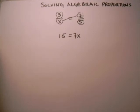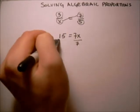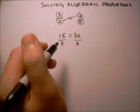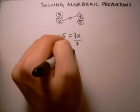Now we want to get x by itself, and so we'll divide by what's multiplying x which is the 7, and we get that x equals 15 sevenths.